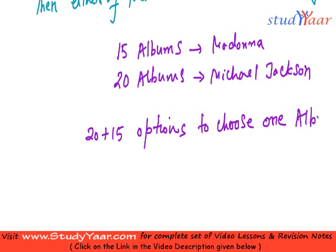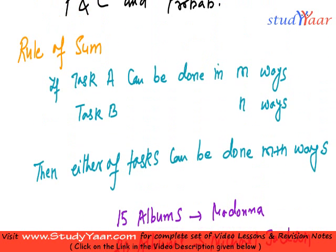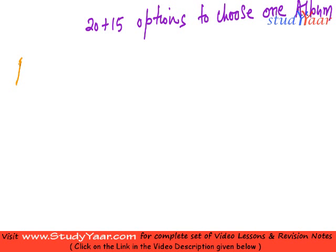Task A is choosing one album from Madonna's collection, and task B is choosing one album from Michael Jackson's collection. If you have to choose one album from either of these two, then you have a total of 20 plus 15, which is 35, options to choose from. That is the fundamental principle of counting for the rule of sum. Similarly, we also have the rule of product.